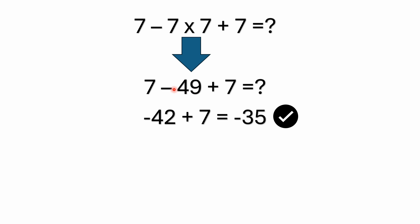What do you think that equals? You go left to right: seven minus 49 is negative 42. Then plus seven — negative 42 plus seven is negative 35. I've seen a lot of people just answer 35, really just getting their signs confused. Remember, this is a negative number. If you're looking at a number line, and your positive numbers are to the right and your negative numbers are to the left, this is far to the left of zero. So negative 42 plus seven is negative 35.